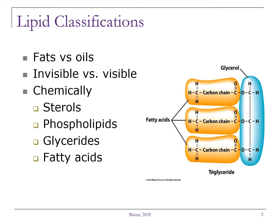The majority of food fats are in the form of triglycerides. From the visual of the chemical structure of triglycerides, you can see that a triglyceride has a water-soluble glycerol backbone with three fatty acids attached. A monoglyceride would just have the one fatty acid attached and a diglyceride would have two fatty acids attached.